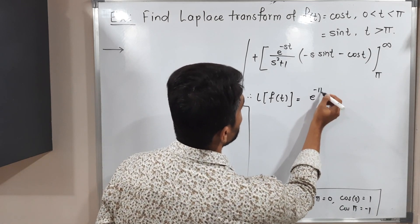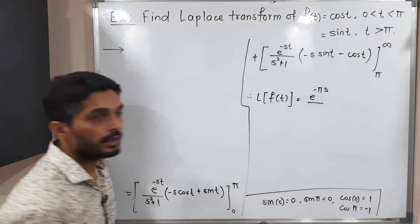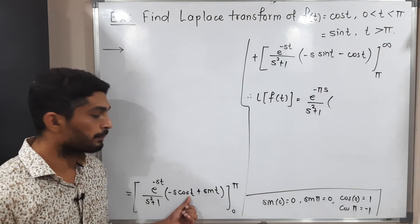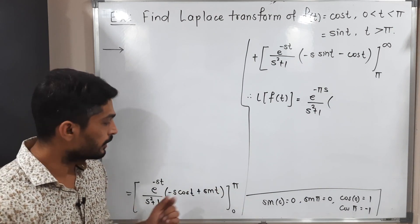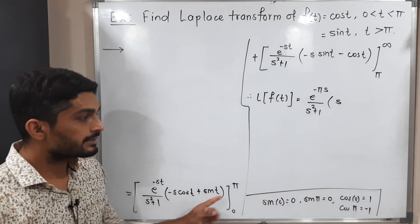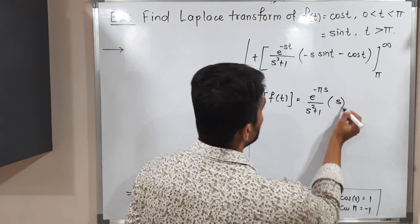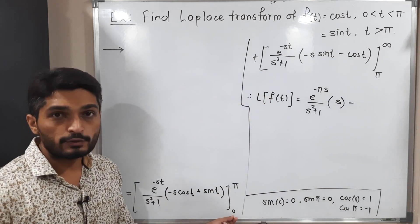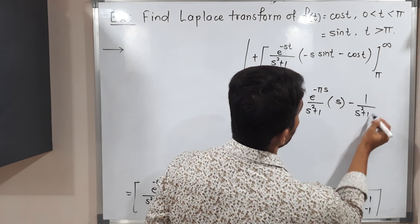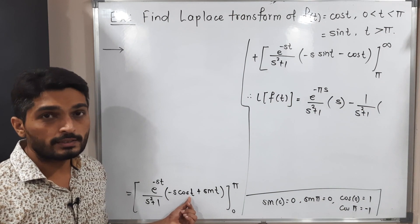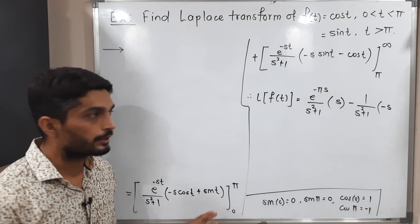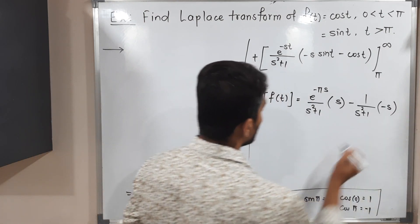Putting t = π: cos(π) is minus 1, so minus 1 times minus s gives plus s; sin(π) is 0 so that term vanishes. Then subtracting the lower limit t = 0: e^0 = 1, so we have 1 divided by (s² + 1), with cos(0) = 1 giving minus s, and sin(0) = 0 vanishing. This finishes the first bracket.